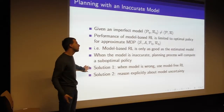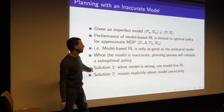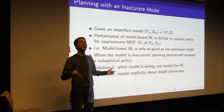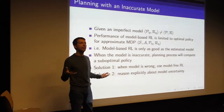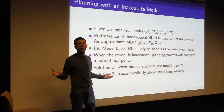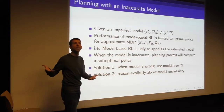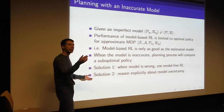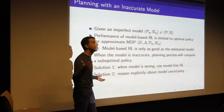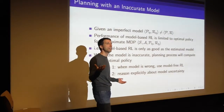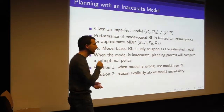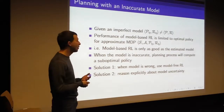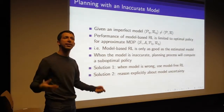One option is to use model-free reinforcement learning when your model is wrong — if we know that our model is just junk, don't trust it; trust your value function or policy instead. Another solution is to reason explicitly about model uncertainty. This is the Bayesian approach — you can understand that you're in a situation where you don't know about your model in certain states.